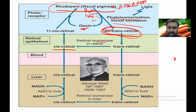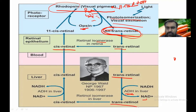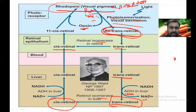Some portion of the retinal will go to the liver, where there is an enzyme called alcohol dehydrogenase. With the help of NADH oxidized to NAD, trans retinal is reduced to trans retinol. Then in the liver, with the help of isomerase, it is converted to 11-cis retinal, which is then oxidized back to 11-cis retinal and binds with opsin to resynthesize rhodopsin.